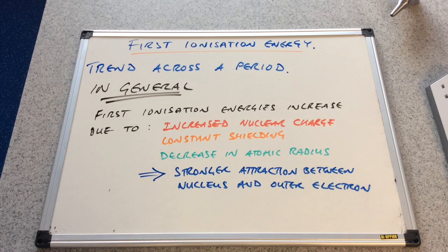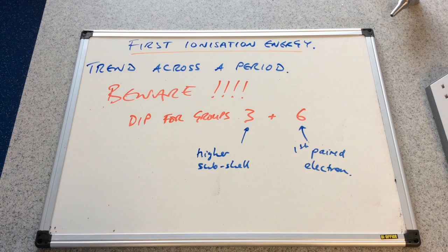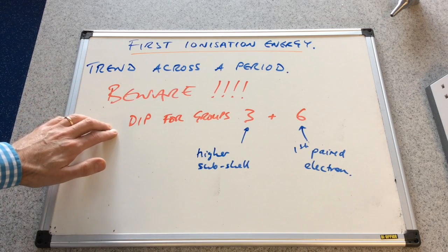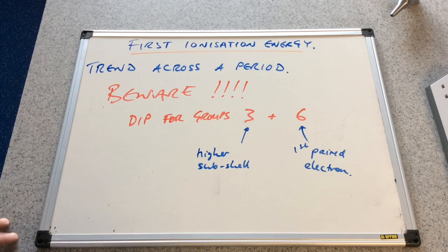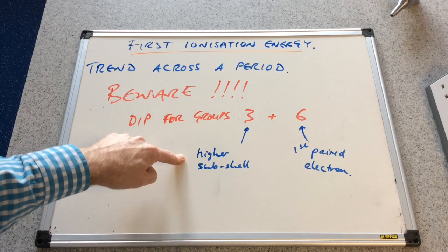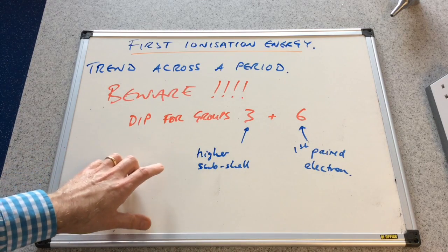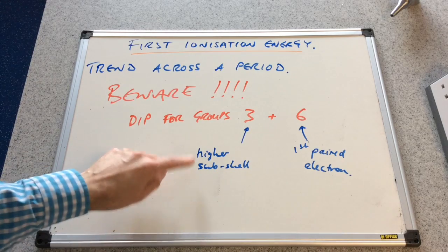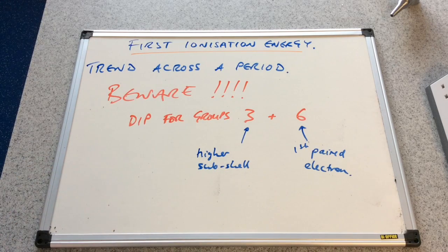And of course we mustn't forget the dips for groups 3 and group 6. So the group 3 reason was it's the first from a p subshell, higher in energy, therefore a little bit less energy needed to remove.